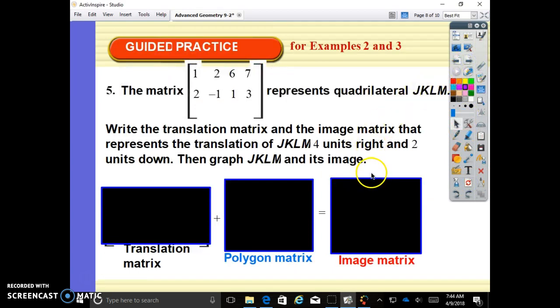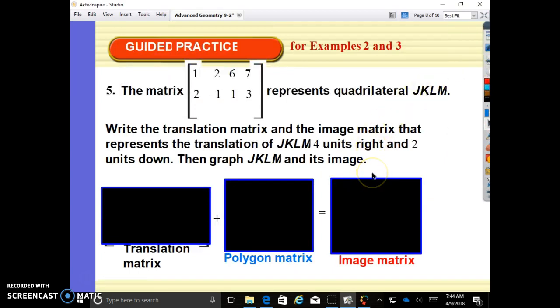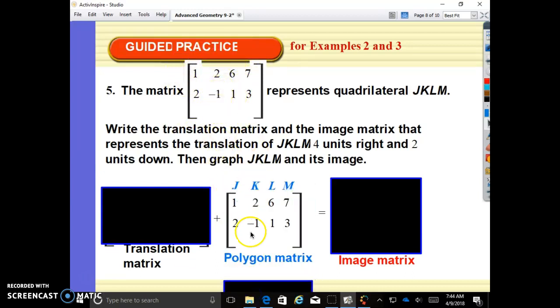The matrix 1, 2, 2, negative 1, 6, 1, 7, 3 represents the quadrilateral JKLM. Write the translation matrix and the image matrix that represents the translation of four units to the right and two units down. Then graph JKLM and its image. So this is our JKLM. This is our pre-image, so we're going to just copy this straight down. And then what is our translation matrix? We are going four to the right. If we're going to the right, it's affecting your x values, and that's going towards the positive number. So you're adding four. You're going to put positive fours to your x's. And then your y's, you're going down two or negative two.